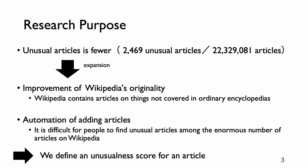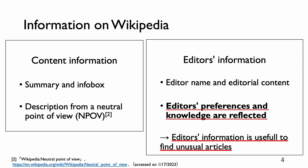It is difficult for people to find unusual articles among the enormous number of articles on Wikipedia. Therefore, we define an unusualness score for an article. There are two main types of information used in the research area of Wikipedia: content information and editor information. Content information is described from a neutral point of view, while editor information reflects editors' preferences and knowledge. Also, editor information is easy to define a score by counting the number of editors for an article, so editor information is useful to find unusual articles.